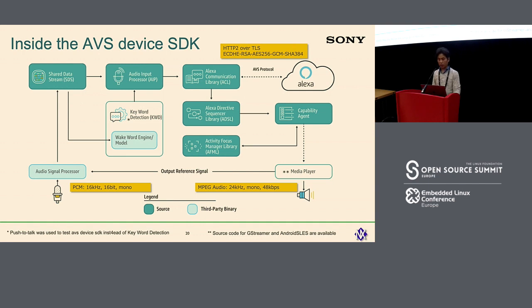This shows the audio signal flow inside the SDK. As you can see on the left-hand side, the audio input format is PCM 16 kHz, 16-bit, mono. With this SDK you can use your own keyword detection; however, in this study I decided not to use keyword detection but to use push-to-talk instead. Communication between the SDK and the Alexa service is transported with HTTP/2 over TLS. Voice data from Alexa is encoded in MPEG audio format — 24 kHz and 48 kbps. To decode the MPEG audio, I decided to use a hardware decoder inside the processor.